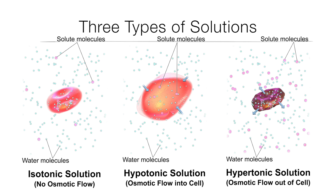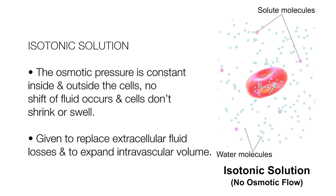There are three types of crystalloid solutions: isotonic solutions, hypotonic solutions, and hypertonic solutions. In an isotonic solution, the osmotic pressure is constant inside and outside of the cells, so no shift of fluid occurs and the cells don't shrink or swell. They are given to replace extracellular fluid losses and to expand intravascular volume.